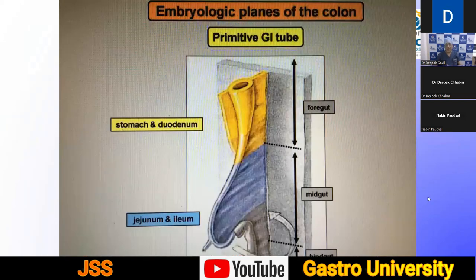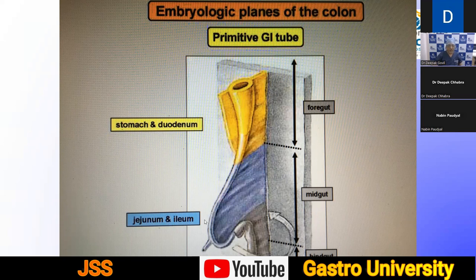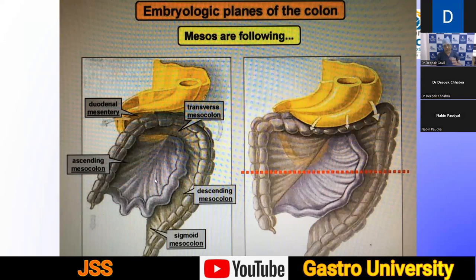The basics start from embryology, as everything is related to embryology. The parts of the colon relate to the foregut, midgut and hindgut, and the blood supply and a lot of things depend on this embryology. The upper part is responsible for the stomach and duodenum, the middle part for jejunum and ileum, and the hindgut gives rise to the colon. These all rotate and have significance while performing surgeries in dissecting avascular planes.